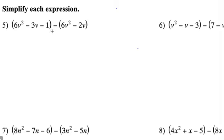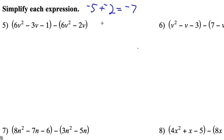Let's try some subtraction problems. A strategy we can use is adding the opposite. For example, negative 5 minus 2 — we add the opposite and get negative 7. Or 8 minus negative 3 — we add the opposite and get 11. Just a reminder of how adding the opposite works with integers.